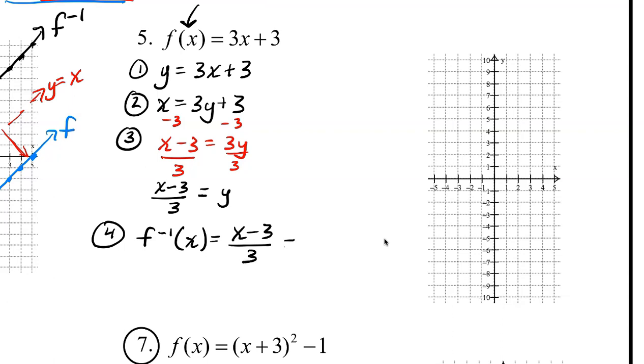Which is also equivalent to (1/3)x minus 1. Then we're asked to graph each line. I'll do the first line in blue, I'll do this inverse in black. For the first line, we'd have 3, the y-intercept, a slope of 3, up 3 to the right. There we go. So here's our line for our original function.